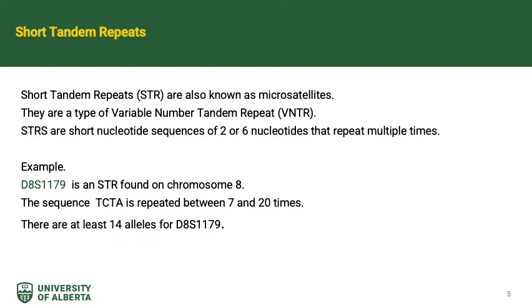In the STR D8S1179, the tetrameric sequence is TCTA, and it can be repeated between 7 and 20 times. In the Northern European Caucasian population, there are at least 14 alleles for this STR.